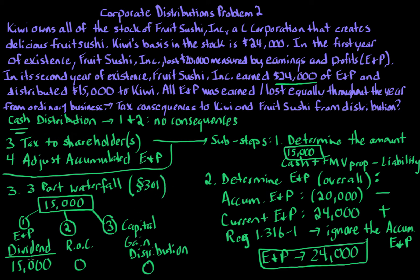So the tax consequences to Kiwi: the full $15,000 distribution is a dividend. Kiwi's basis in the stock remains $24,000, since there is no return of capital and no capital gain distribution. We've now determined the tax consequences to Kiwi through sub-steps one, two, and three of step three.